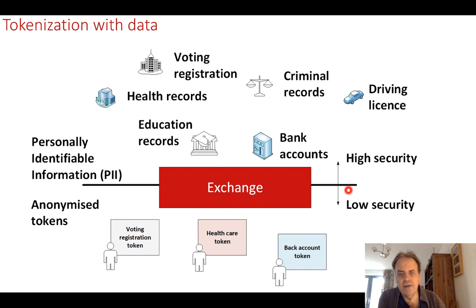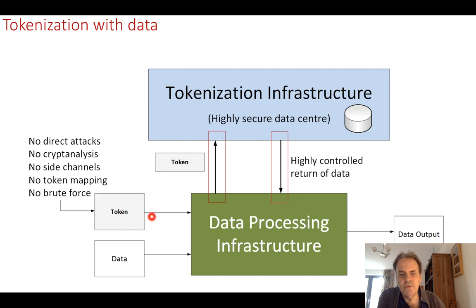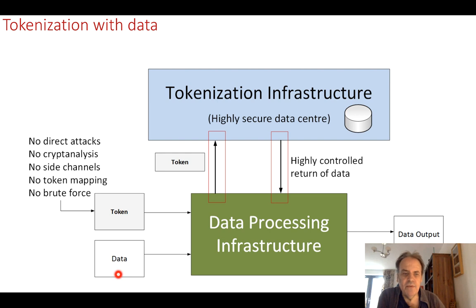In this way we can have low security environments and high security ones. Tokens should work by having no threat attacks, no cryptanalysis, no side channels, no token mapping to trace details back to the identity, and no brute force — it should not be possible to brute force a token to discover the details contained within it. Normally what we do is feed data into our data processing infrastructure and get some output. The data is at risk as it travels through the infrastructure, possibly onto third parties, and it will have to be stored somewhere — so we risk revealing the original identity all along the way.